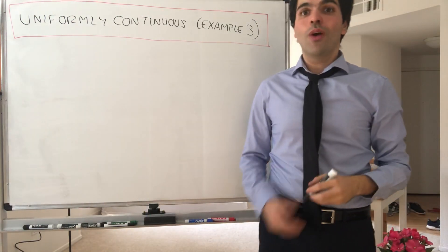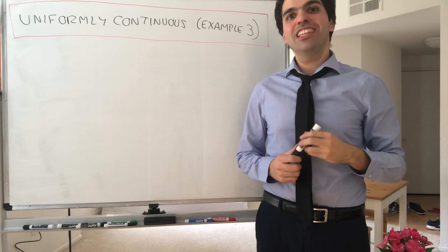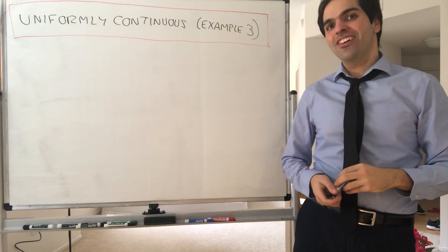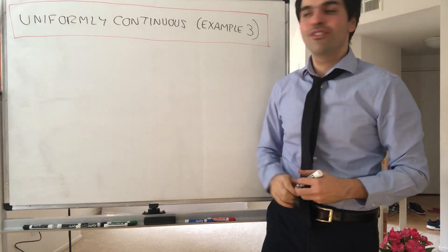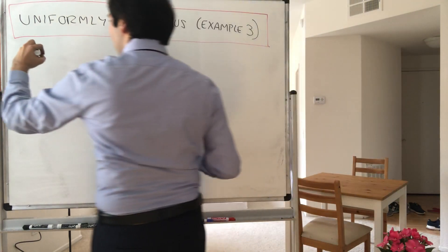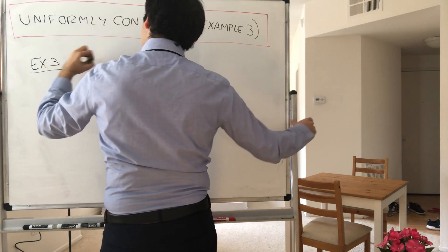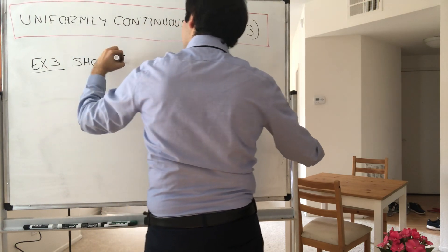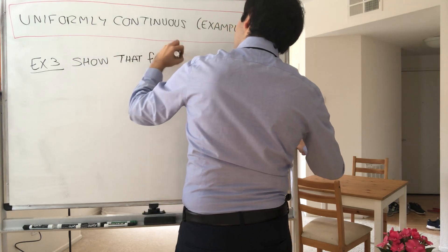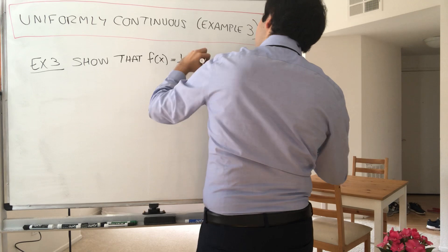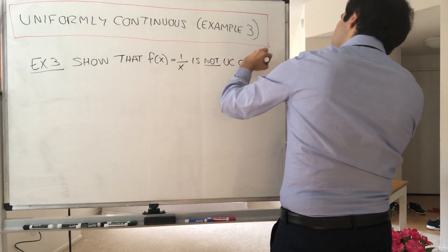All right, thanks for watching. Because you can't come to appreciate the light until you've seen the darkness, today I will do an example of a function that's not uniformly continuous. More precisely, I will show that the function f of x equals 1 over x is not uniformly continuous on (0,1).